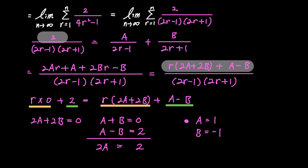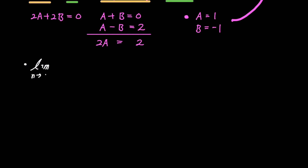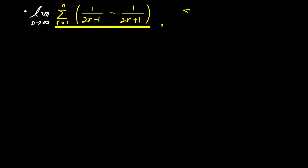Substituting the found values of a and b into the expression, we can express it as the limit as n goes to infinity of the sum of 1 over 2r minus 1 minus 1 over 2r plus 1 as r goes from 1 to n. Let's refrain from applying the limit for now and explore how this sum can be expressed more simply.